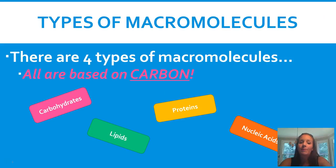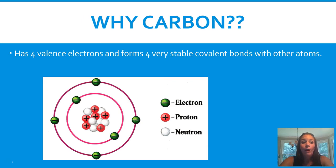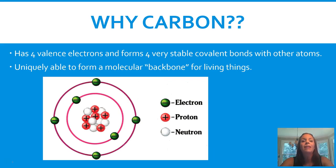There are four types of macromolecules you need to know: carbohydrates, lipids, proteins, and nucleic acids. Most of this video will focus on the first three. Nucleic acids — essentially DNA — are in everything you eat, and we do a whole unit on DNA later. As for why carbon is used, it has four valence electrons and forms four very stable covalent bonds with other atoms. It's also the backbone for living things.